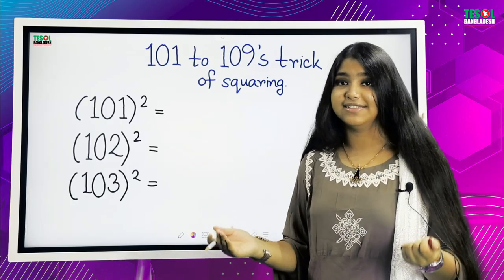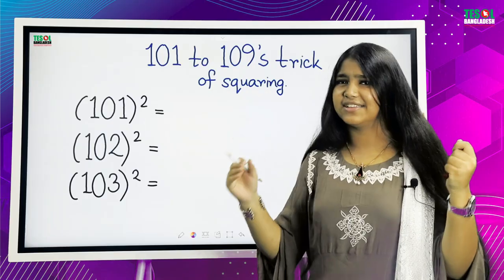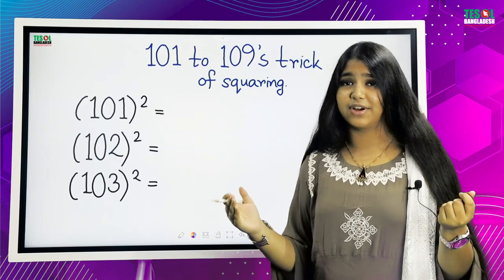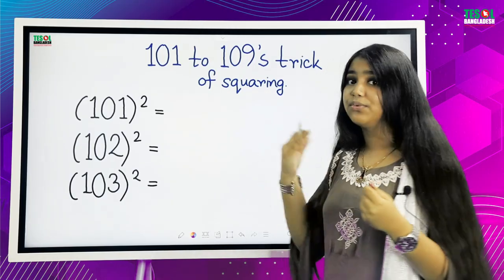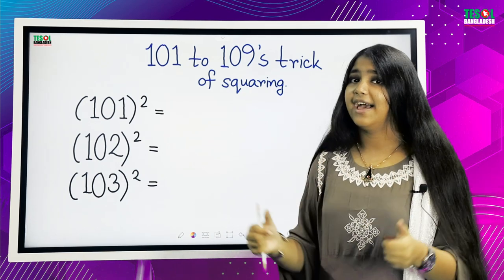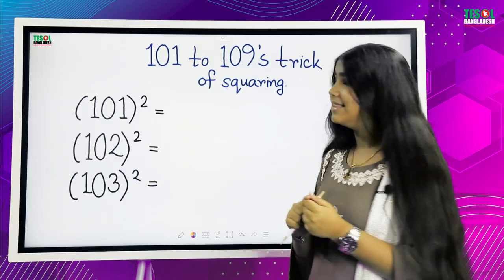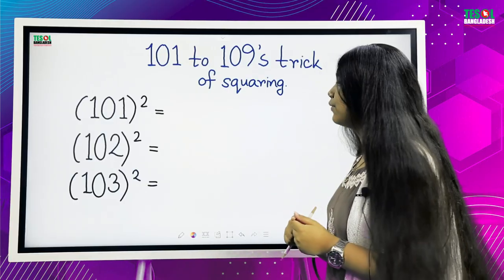101 to 109 squaring trick. So, we know that this is a lot, lot bigger number for us. I mean, 101 squared, 109 squared, too big. But don't worry, as Zarin is here, then no fear. So, without any delay, let's start the first one, 101 squared.